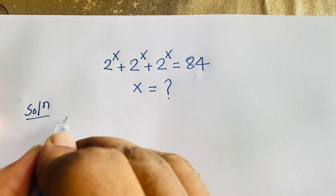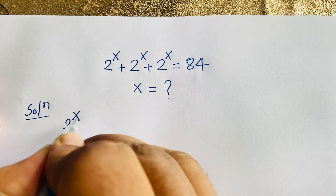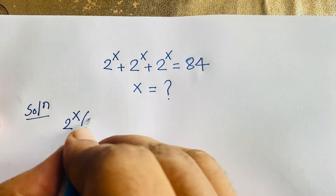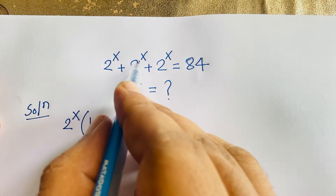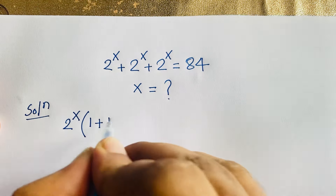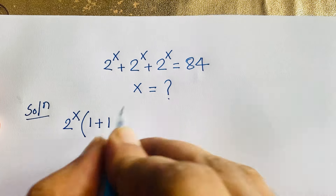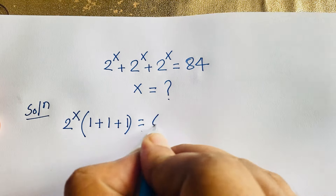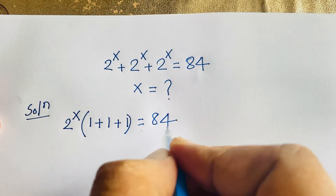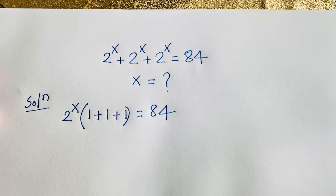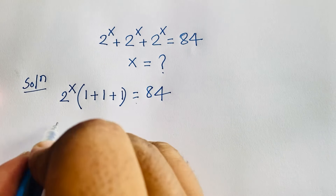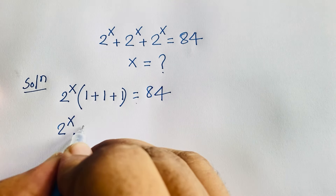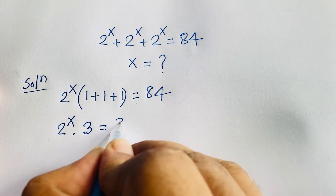Here, 2 to the power x is common. Factoring it out: 2 to the power x times (1 plus 1 plus 1) is equal to 84. So 2 to the power x times 3 is equal to 84.